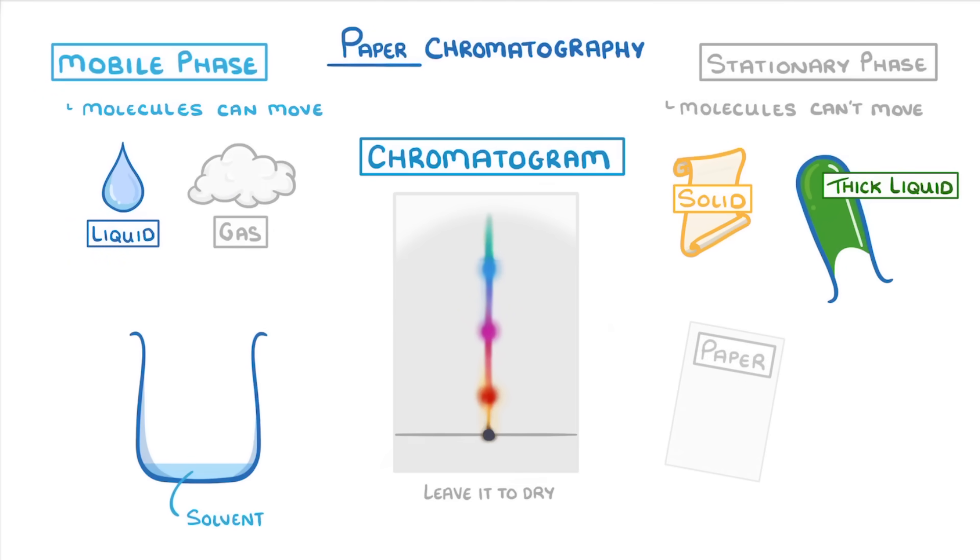During the chromatography experiment, the different chemicals in our sample of ink will constantly change between the mobile and stationary phases: dissolving in the solvent, moving a little bit, and then binding to the paper, over and over again. And so overall, how much time they spend in each of these two phases is going to determine how fast they move up the paper.